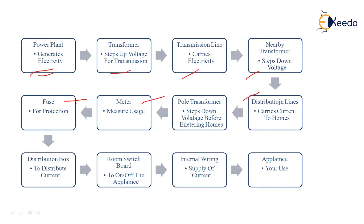From the meter it goes to the fuse, a protecting device which melts and opens the circuit to reduce the harmful effects of overloading. From the fuse it goes to the distribution box, which distributes current to wherever it is required. From the distribution box it comes to our room switchboard — the sockets and switches from where we switch appliances on and off — and from there internal wiring supplies the current.